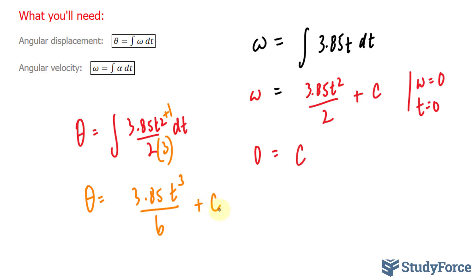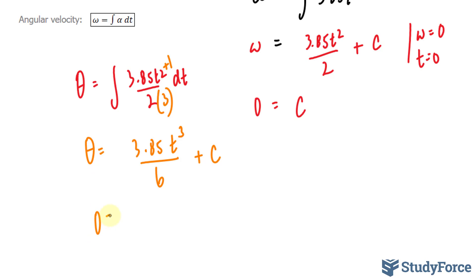Once again, using the same premise as before, it's starting at rest, so t equals 0, and theta also equals 0. This gives me 0 equals 3.85 times 0 to the power of 3, that's 0. So our constant is c.